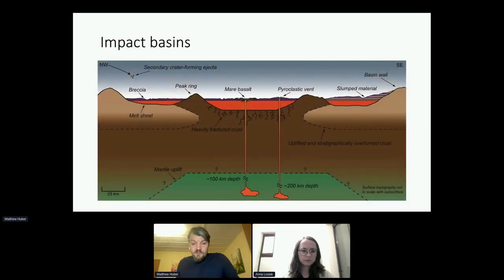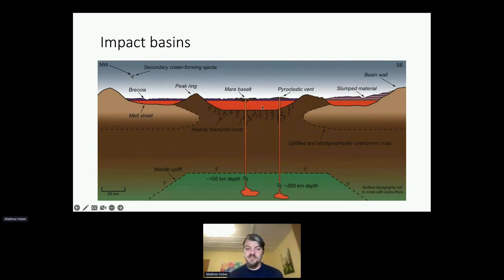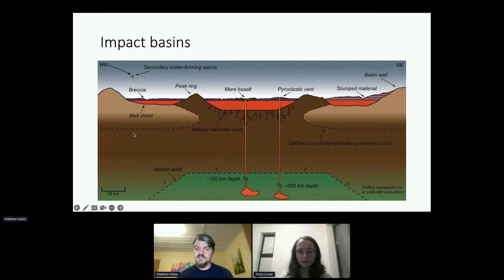The highest probability of preserving these old craters is going to be the largest impact structures. On Earth, the largest impact structures we have are impact basins. These are well studied from other planets. This is a model made by LPI based on lunar craters, showing this uplifted peak ring structure with a melt sheet infilling the structure and fractures below the crater floor on the scale of the entire crust.